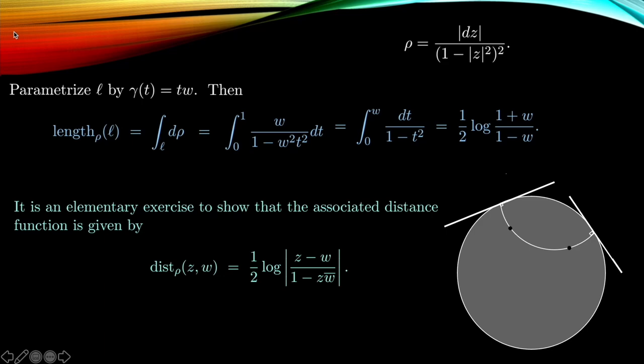Now from here we can consider an associated distance function, namely the distance with respect to this. You can show that the distance function for the Poincaré metric is given by one half of the logarithm of the modulus of this fractional linear transformation. Now what do we see here? What we see is that the shortest length between these curves is going to be given—so the thing that minimizes the length functional—